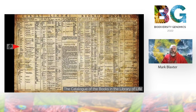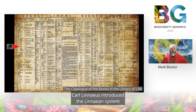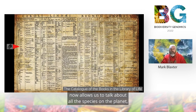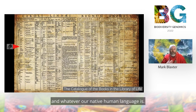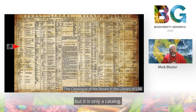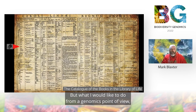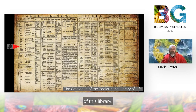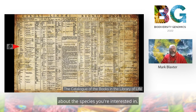250 years ago Carl Linnaeus introduced the Linnaean system for describing life on this planet, and this lingua franca — this universal language — now allows us to talk about all the species on the planet wherever we are, whoever we are, and whatever our native human language is. The Linnaean system is really successful; we have named about 1.8 million eukaryotic species. I regard this as the catalogue to the library of life — the catalogue of the books — but it is only a catalogue. What I would like to do from a genomics point of view is actually make available the actual content of this library, so you'll be able to go to the library and take out the book about the species you're interested in.